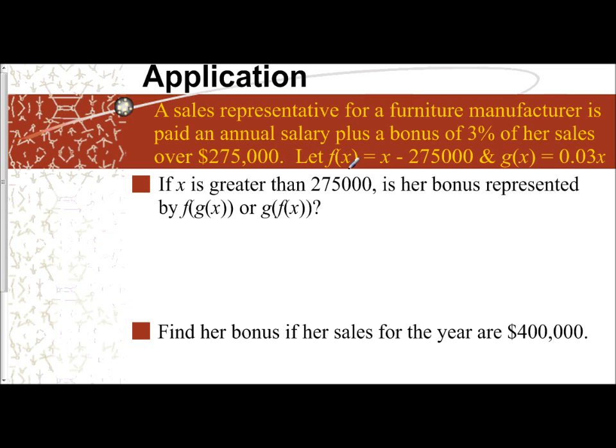We're told let f(x) be x minus $275,000 and g(x) be 0.03x. And so the first question we're given is if x is greater than $275,000, is her bonus represented by f(g(x)) or g(f(x))?